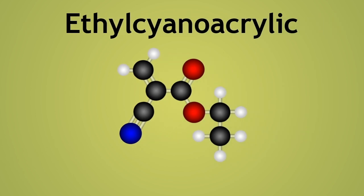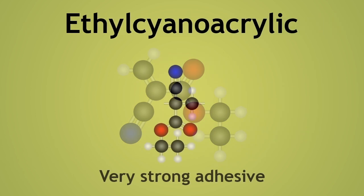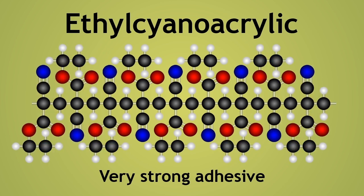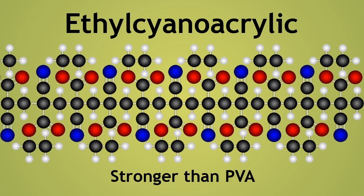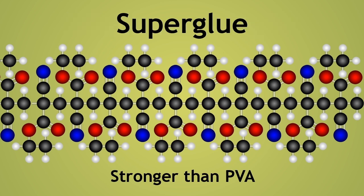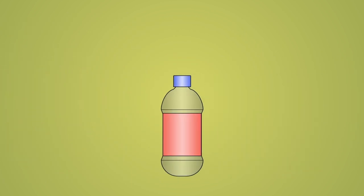Ethyl cyanoacrylate polymerizes to form a very strong adhesive, much stronger than PVA glue. This very strong glue is known as superglue.